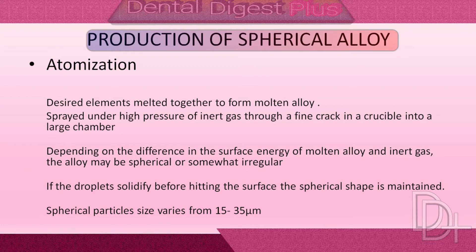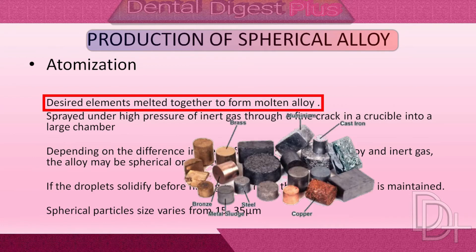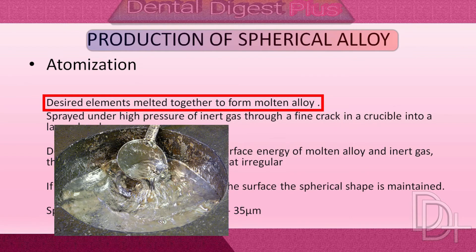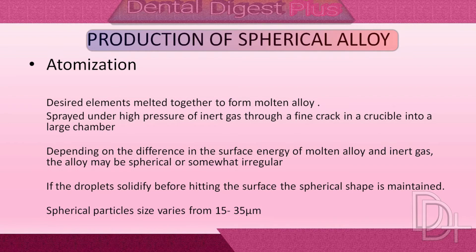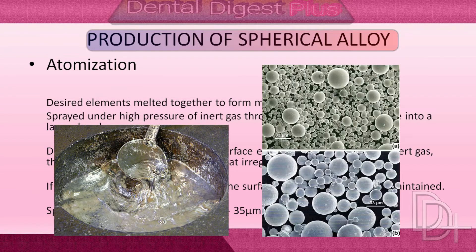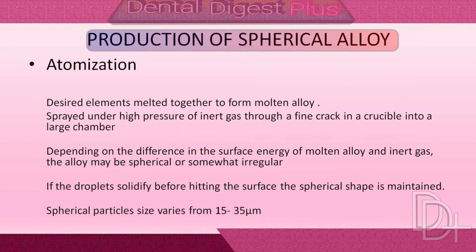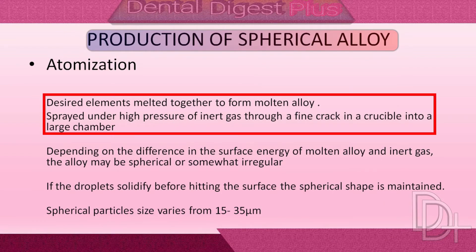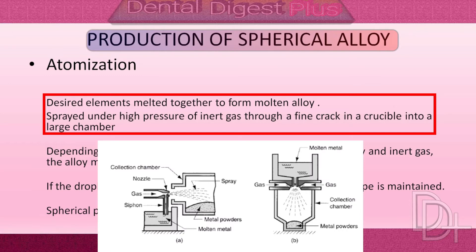Manufacturing spherical alloy: In this process, desired elements are melted together to form a molten alloy. Then the liquid metal is atomized into fine spherical droplets of metal. Atomizing means a process whereby a spray of tiny drops is allowed to solidify in an inert gas or a liquid — for this process, argon gas is generally used.